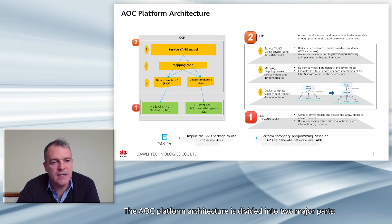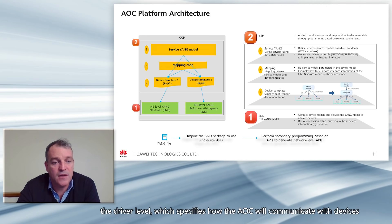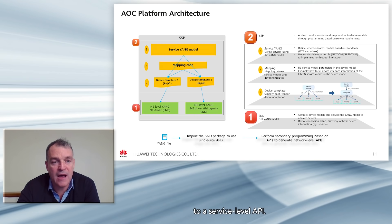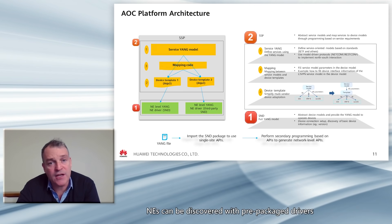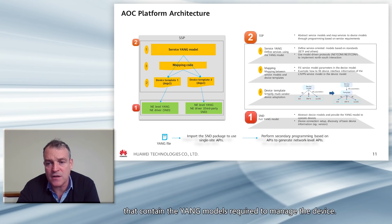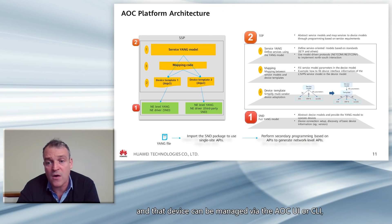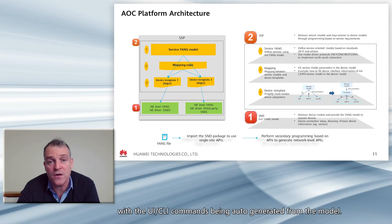The AOC platform architecture is defined into two major parts: the driver level, which specifies how the AOC will communicate with the third-party device, and the service package, which allows the adaptation to a service-level API. Network elements can be discovered and managed with prepackaged drivers that contain the Yang models required to manage the device. Alternatively, custom driver packages can be created and loaded by the operator themselves. Once loaded, a device can be discovered and managed via the AOC UI or CLI, with the UI or CLI commands being auto-generated from the model.